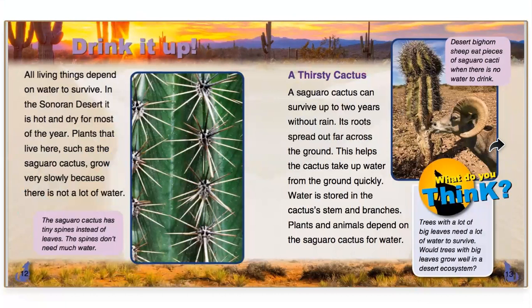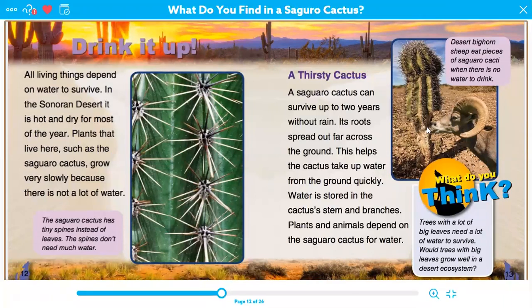Drink it up. All living things depend on water to survive. In the Sonoran Desert it is hot and dry for most of the year. Plants that live here, such as the saguaro cactus, grow very slowly because there is not a lot of water. A saguaro cactus can survive up to two years without rain — wow, two years! Its roots spread out far across the ground, helping the cactus take up water quickly. Water is stored in the cactus's stem and branches. Plants and animals depend on the saguaro cactus for water. Look at this little bighorn sheep getting a drink from the cactus.